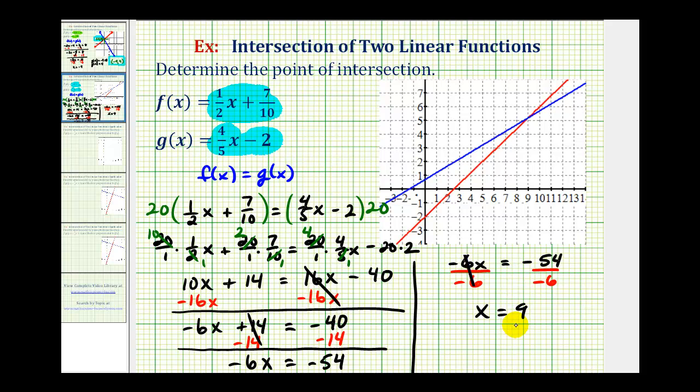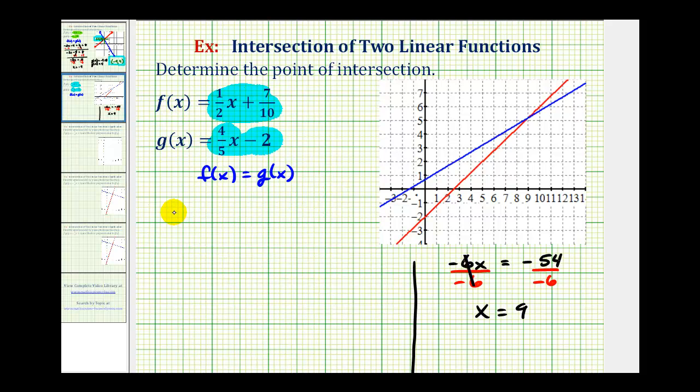So this would be the x-coordinate of the point of intersection. In order to determine the corresponding y-coordinate, we need to evaluate one of the original functions when x equals 9. It doesn't matter which function we use, let's go ahead and just use f(x). So f(9) will be equal to 1/2 times 9, which I'll write as 9 over 1, plus 7/10.